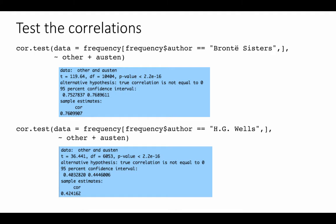In this lecture we've looked at tidy text mining: taking large volumes of text from sources like Project Gutenberg, converting them into tidy form using the word as the unit of analysis by un-nesting tokens, optionally adding line and chapter numbers, and using standard dplyr functions to process the data. We've also combined dplyr and ggplot knowledge to produce interesting plots of textual data — a common type of text analytics.